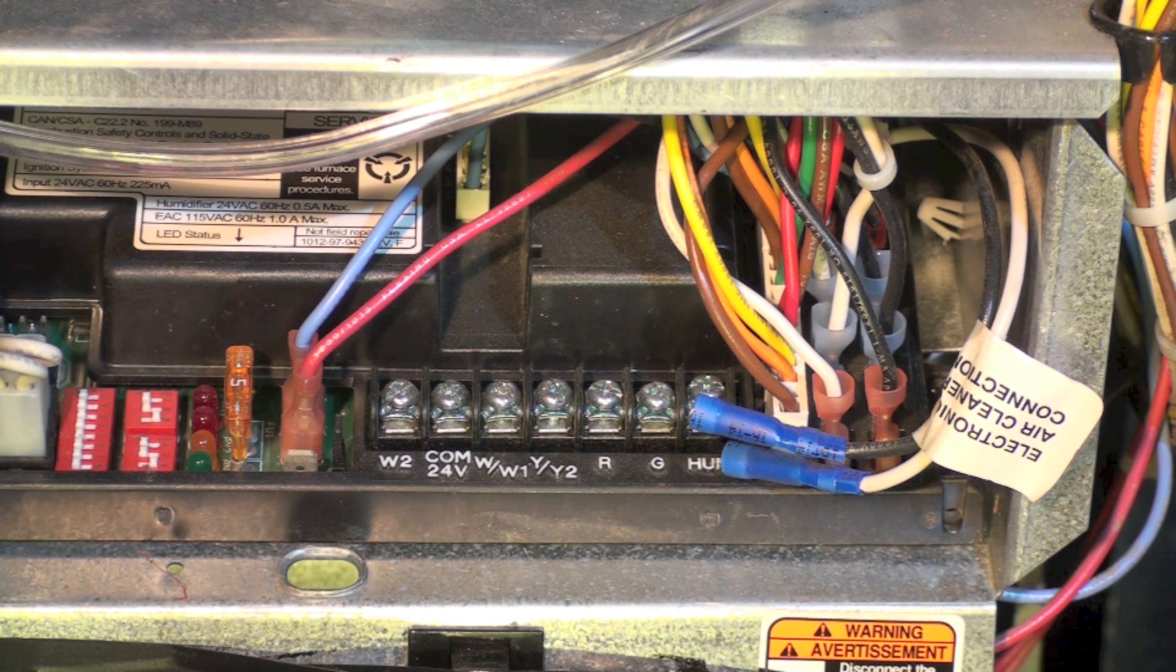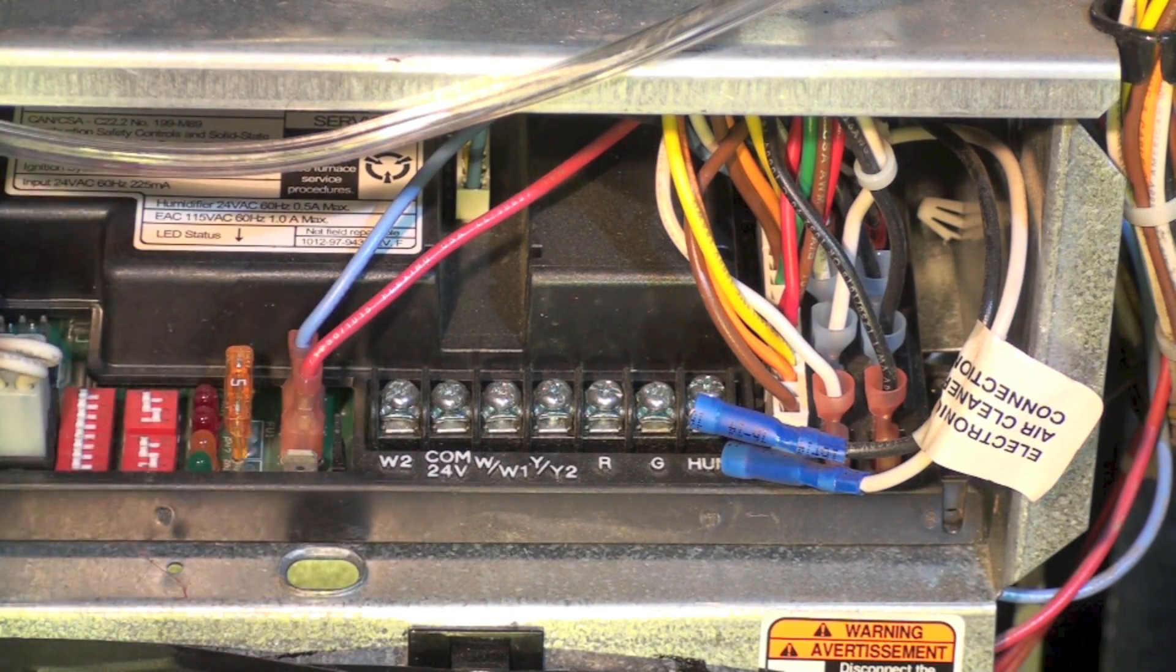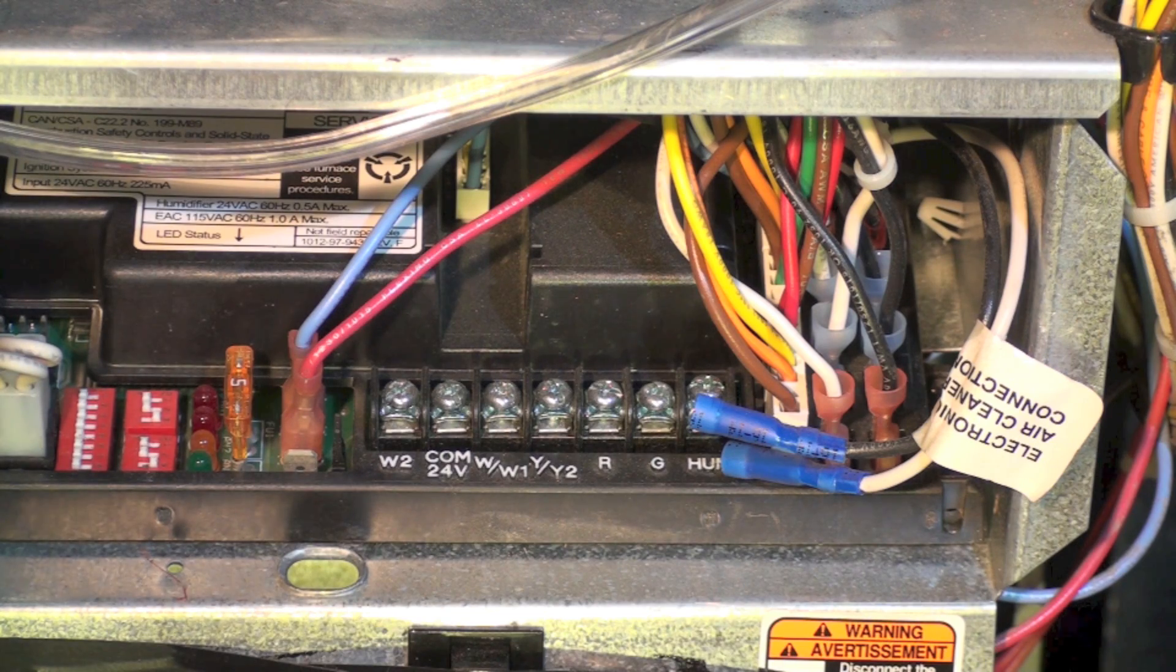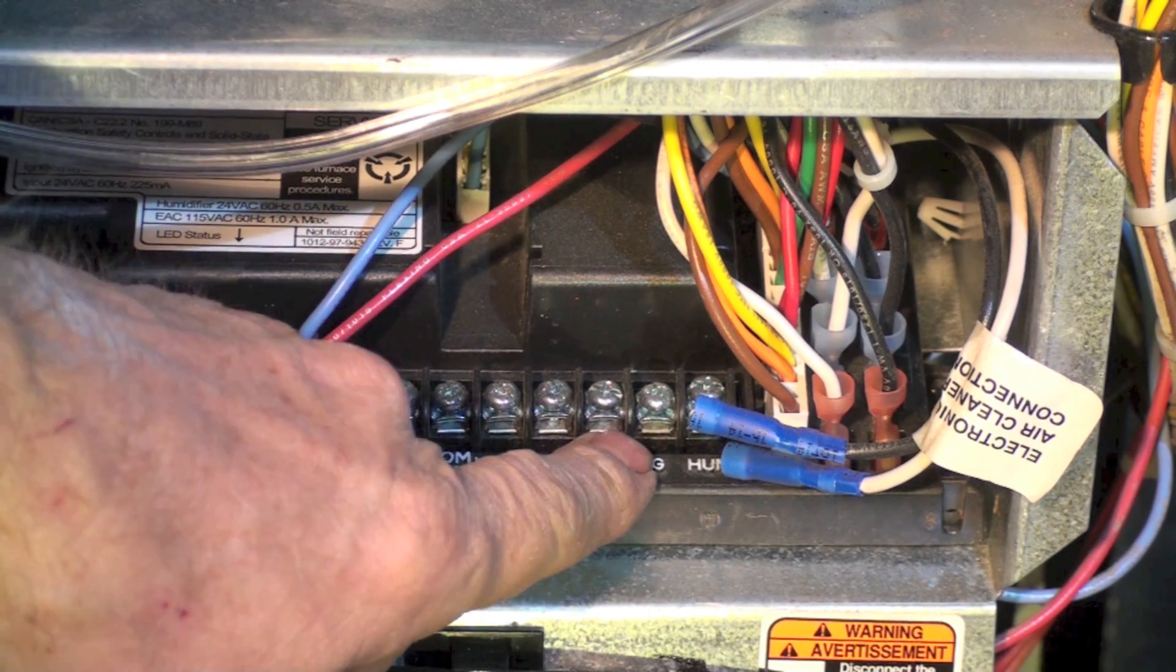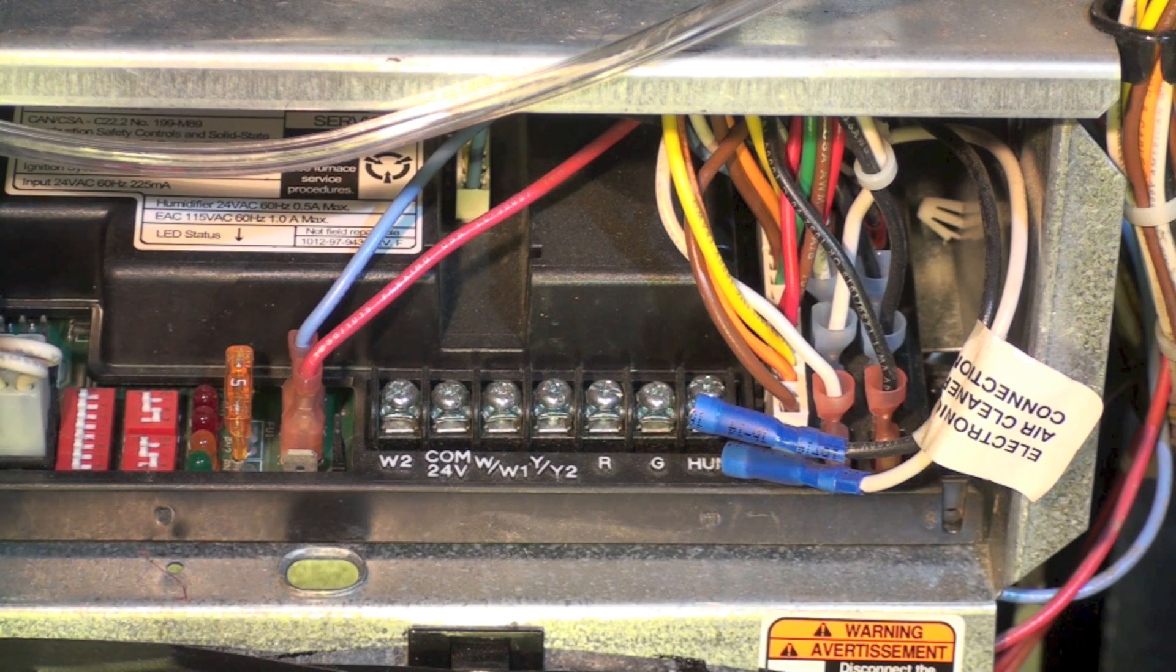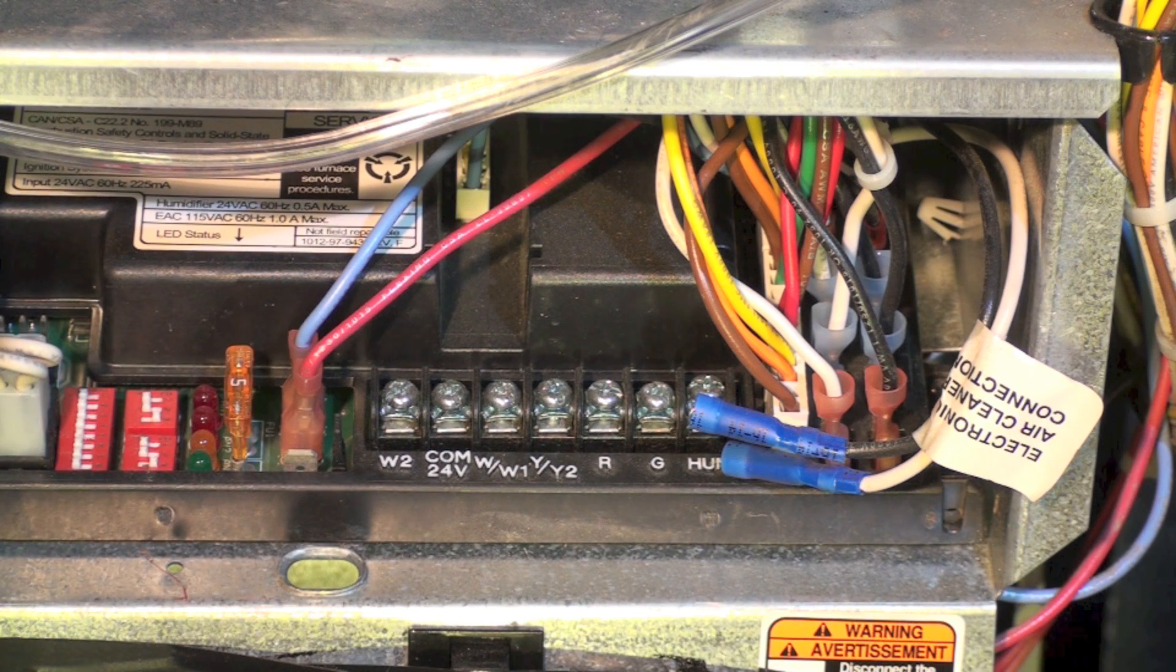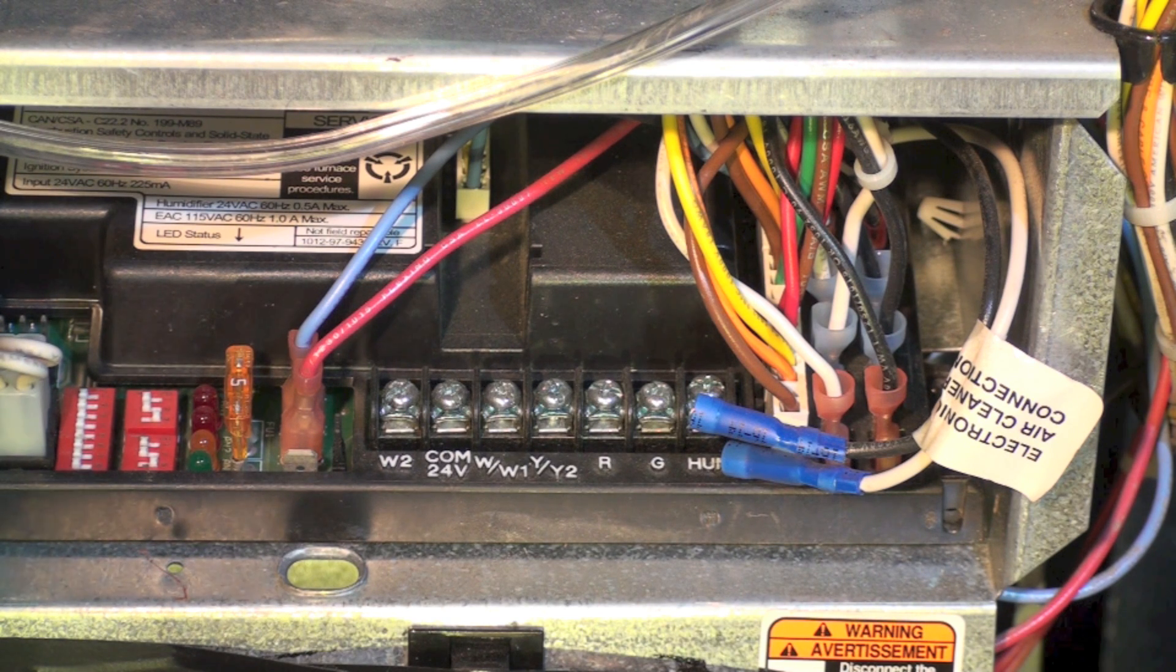I would disconnect any jumper I had between W2 and W1 if there was one, and I would put my jumper from R to W1, get the low stage fire up and running. I usually wait until the circulating fan comes on, and then I jumper to W2. Within about a minute it's going to go up to high fire, and that'll give me a way to test it. So far this thing has been pretty much right on the money for the pressures and so on. Anyway, that's how the second stage works on the Bryant 355 MAB.